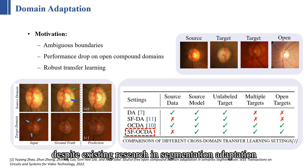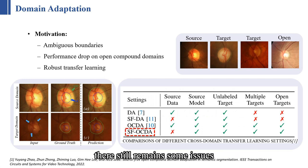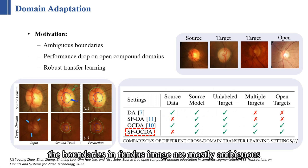Despite existing research in segmentation adaptation, there still remain some issues. Our motivations are as follows: First, we observe that the boundaries in fundus images are mostly ambiguous. Secondly, as the table here shows,